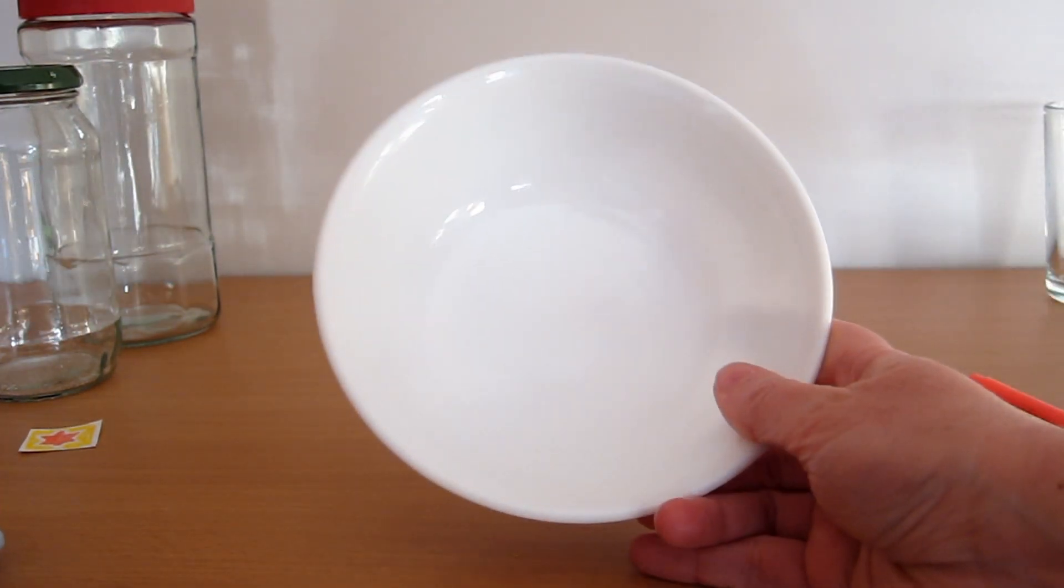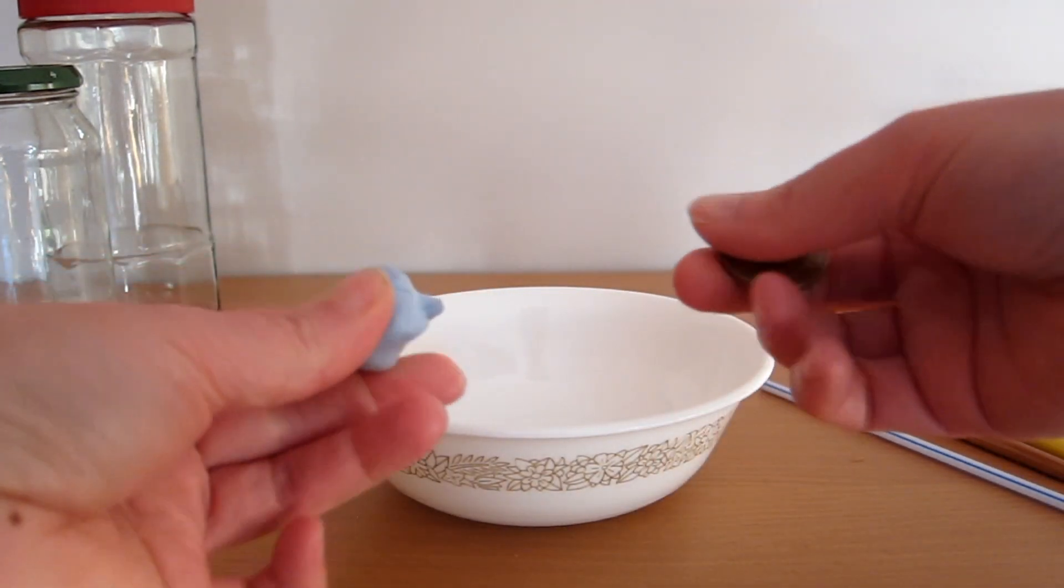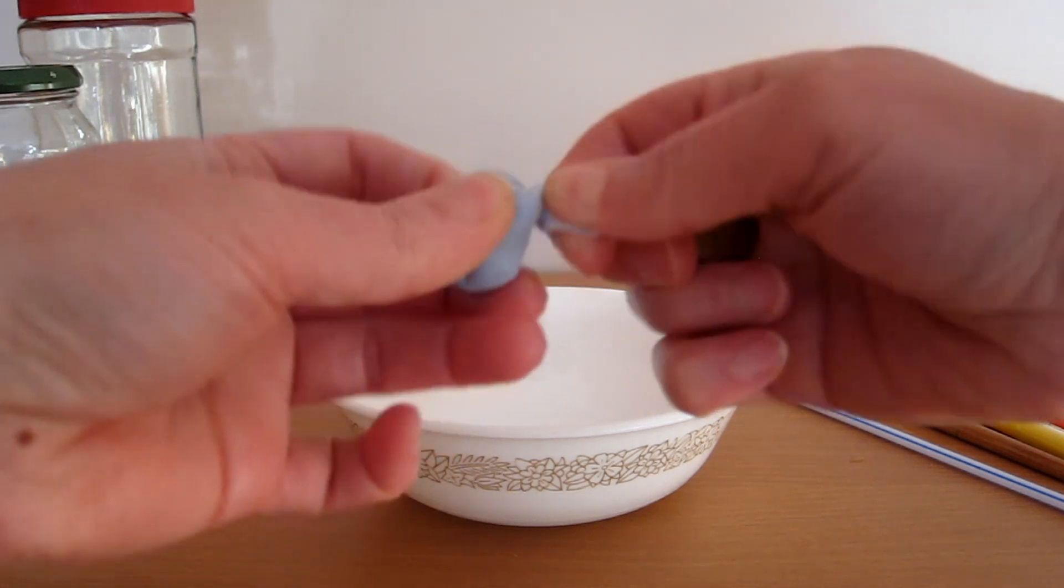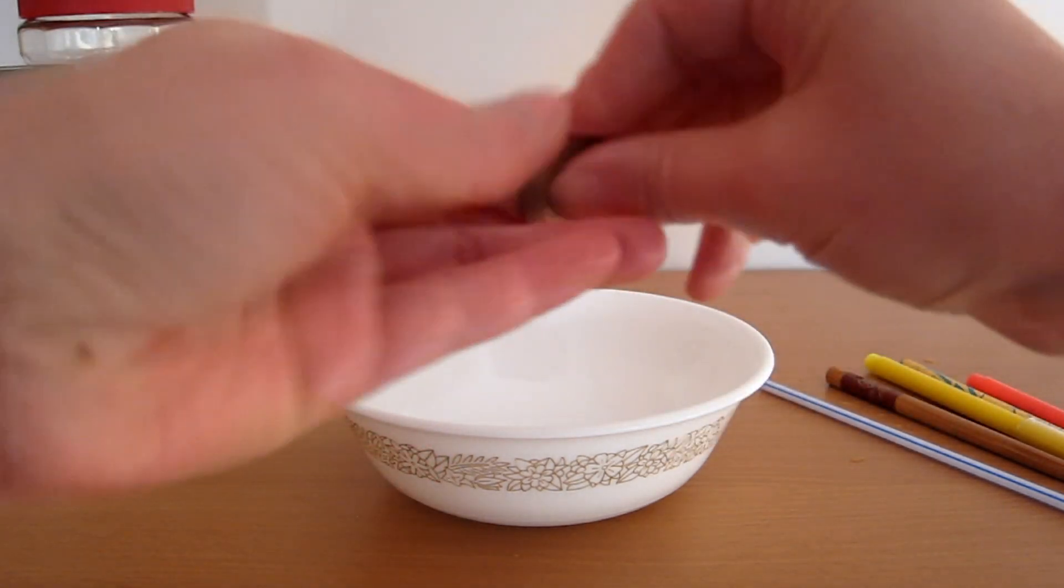Next, take a bowl, get a coin and a bit of plasticine or blu-tack, and stick the coin to the bottom of the bowl.